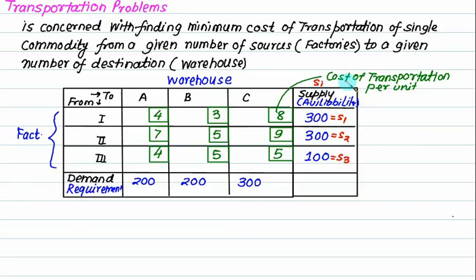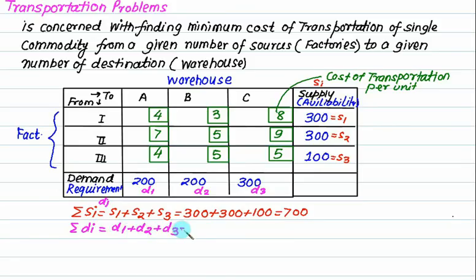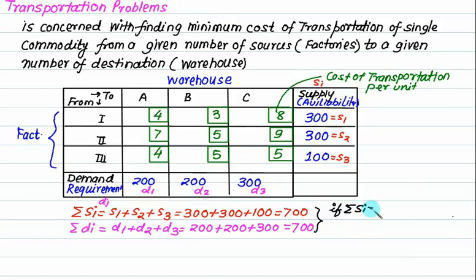Si represents the supply. So total supply is the summation of Si, which equals S1 plus S2 plus S3. In this case, the supply is 300 plus 300 plus 100, equal to 700. Dj represents demand at the destination, so D1, D2, and D3. Total demand equals D1 plus D2 plus D3, which also equals 700. Since total supply equals total demand, the problem is called a balanced transportation problem.